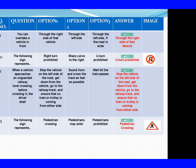Question 9: You can overtake a vehicle in front. Option 1: Through the right side of that vehicle. Option 2: Through the left side. Option 3: Through the left side if the road is wide. The right answer is Option 1: Through the right side of that vehicle. Question 10: The following sign represents. Option 1: Right turn prohibited. Option 2: Severe curve to the right. Option 3: U-turn prohibited. The right answer is Option 3: U-turn prohibited.